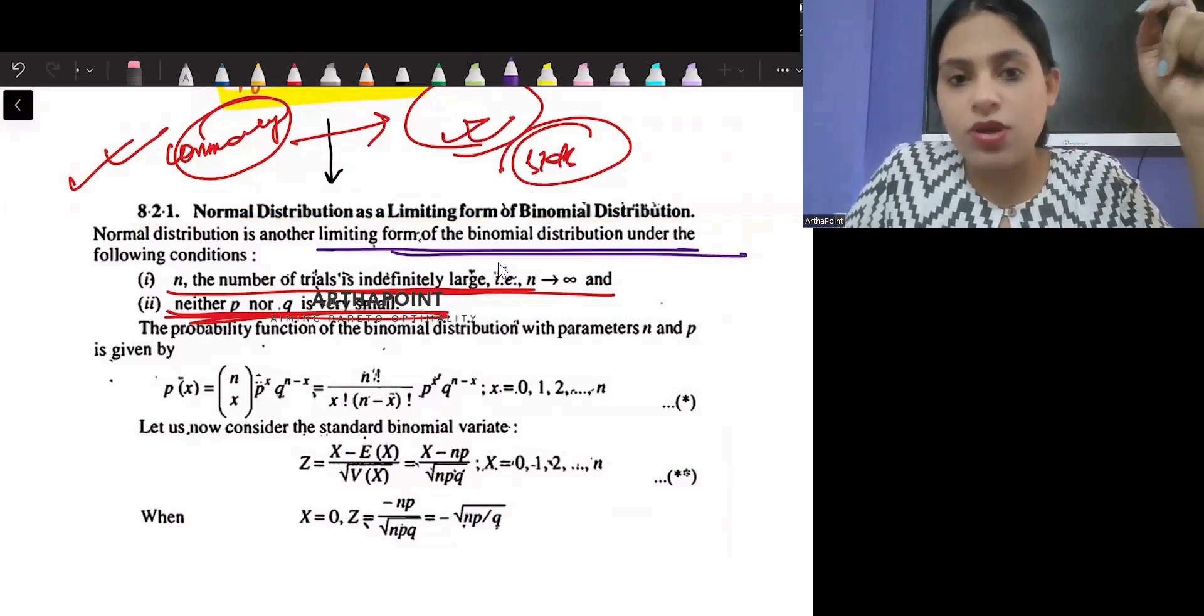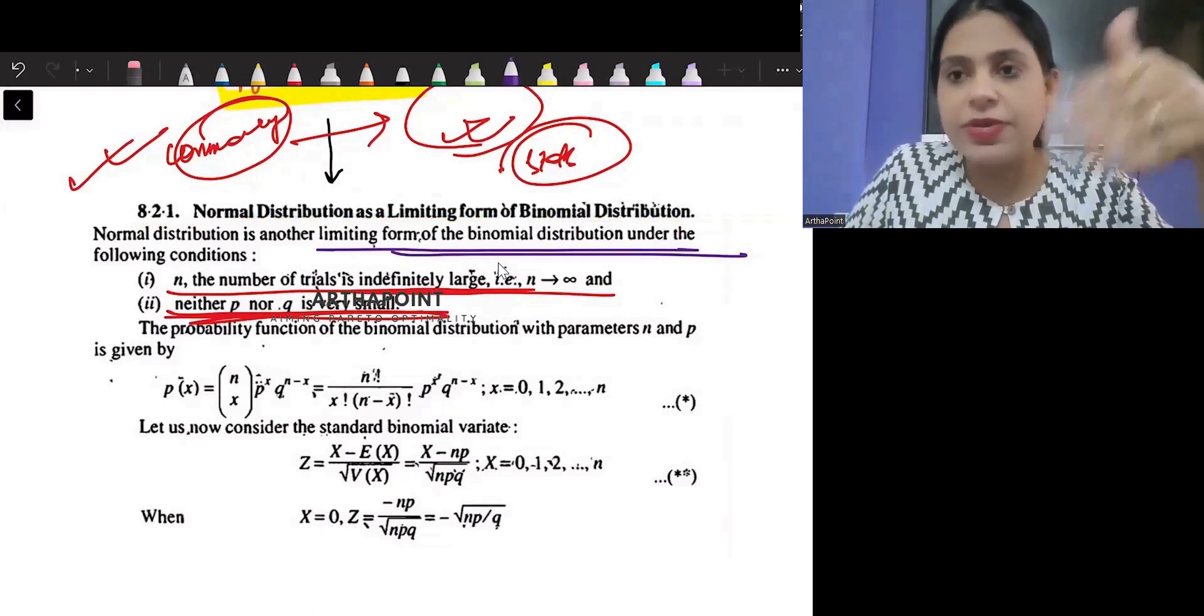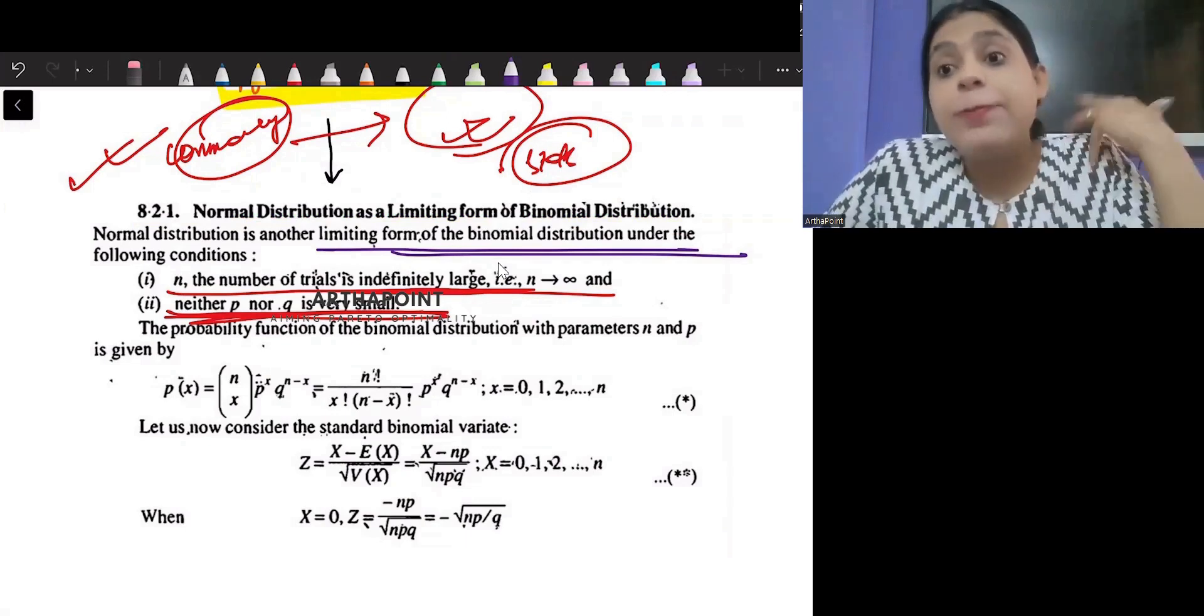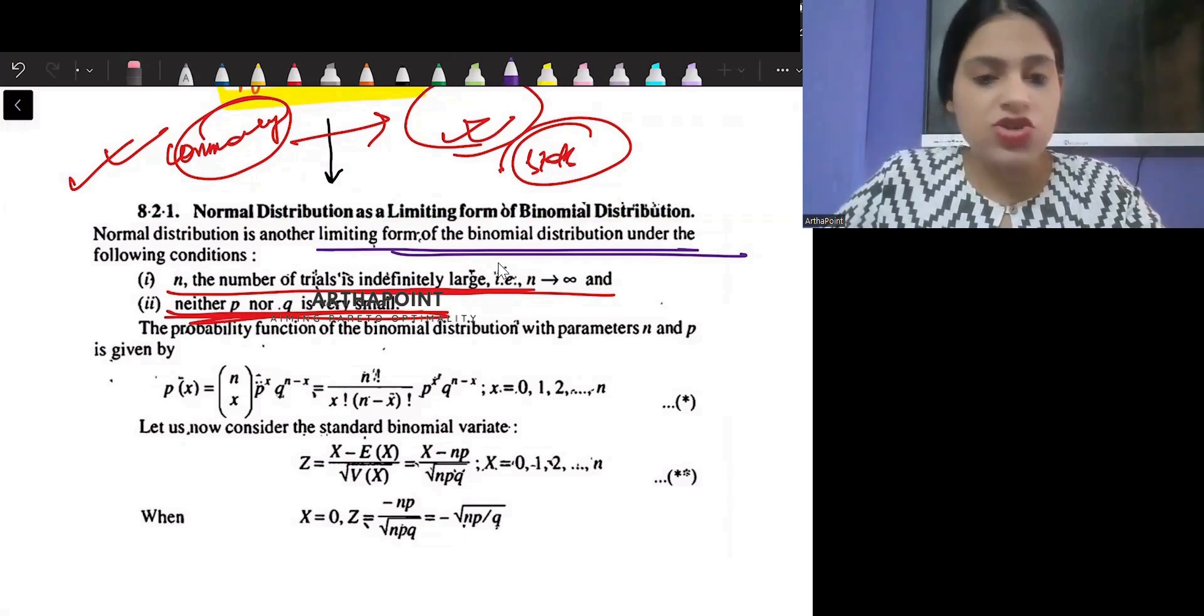And it is said that normal distribution is a limiting form of binomial distribution. So binomial can be approximated by normal distribution. Using these proofs, we can go ahead and we can justify that this answer is actually correct, that normal distribution can also be the answer.